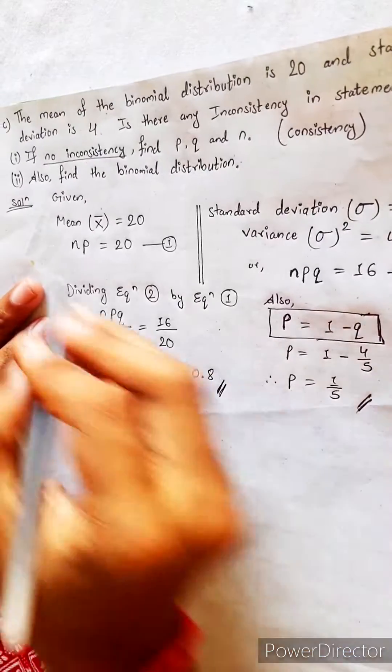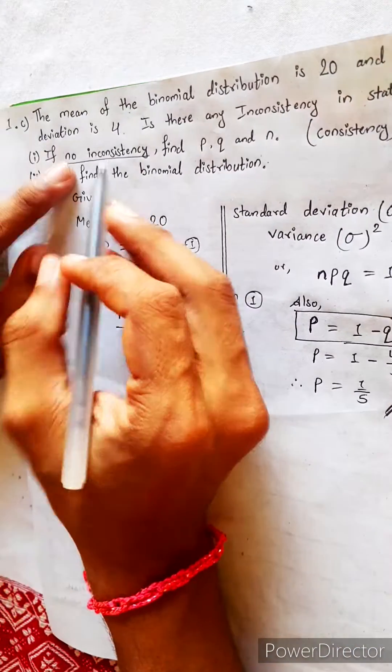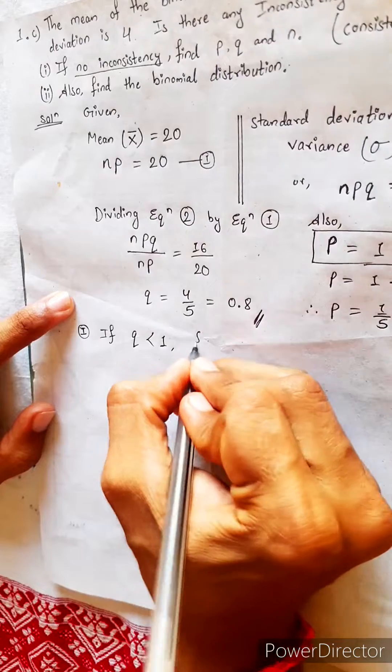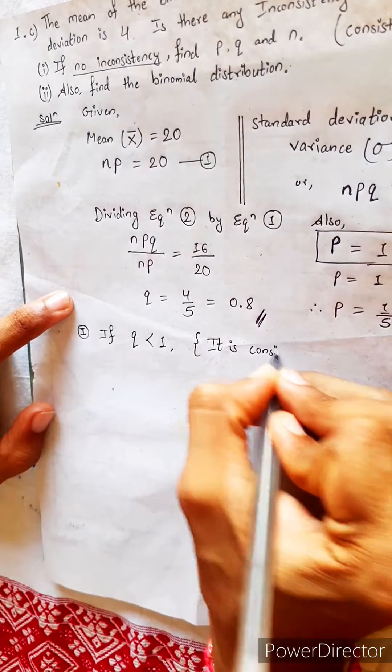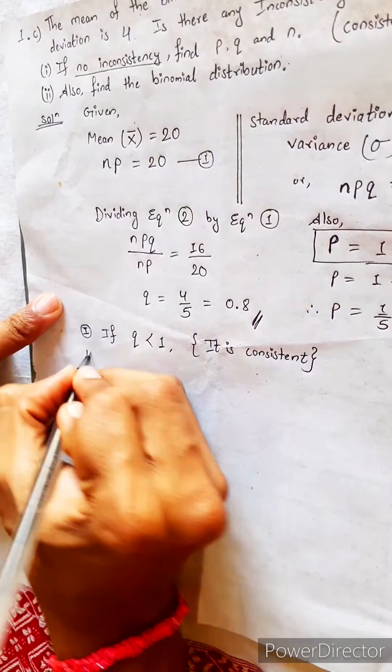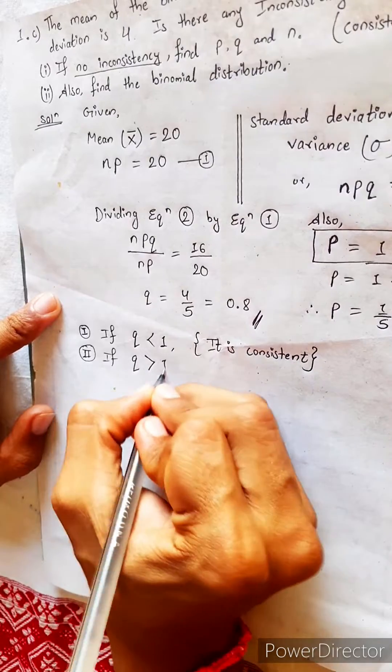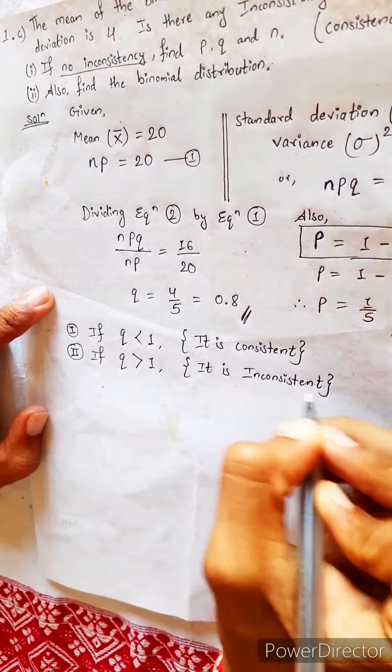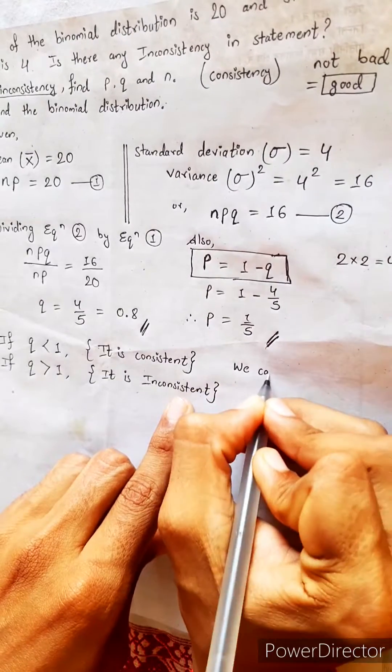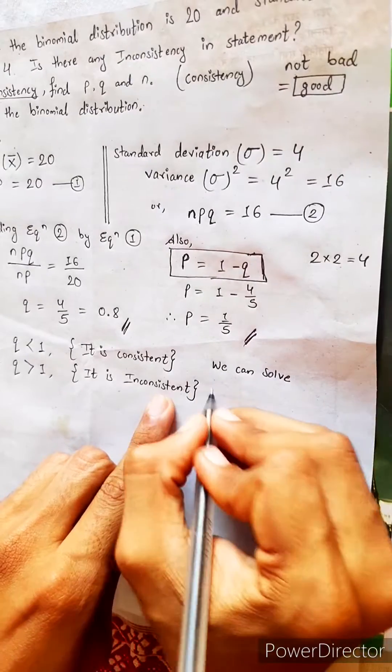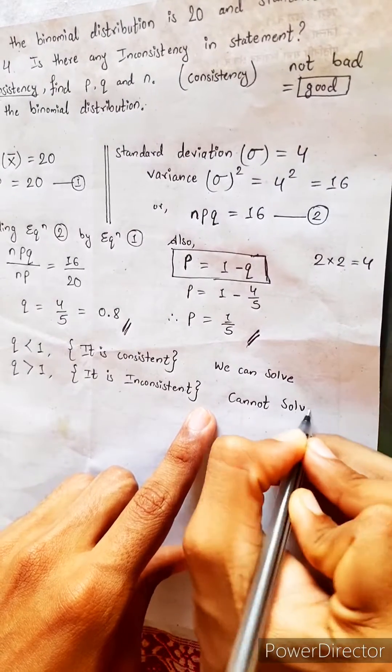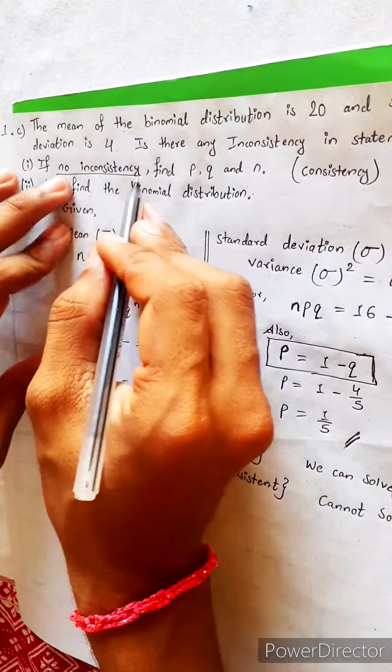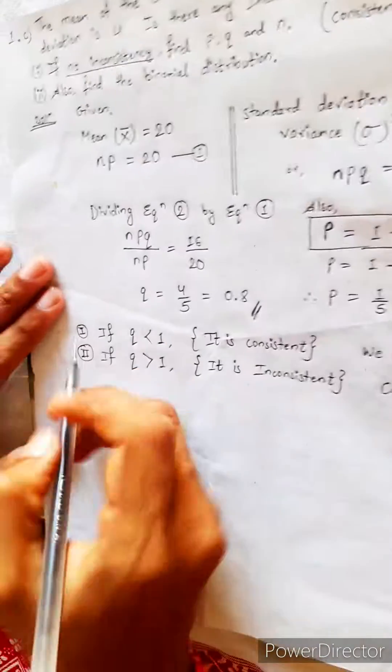Now, what is our main mission? To find N. Let's simply check it is consistency or not. Condition number 1. First condition. If Q is less than 1, then it is consistent. Condition number 2. Look here. If Q is greater than 1, then it is inconsistent. And why people find this consistent and inconsistent? Because consistent we can solve further. But inconsistent we cannot solve. So if somewhere we find inconsistent, we cannot solve the question. Leave it as it is. But if it is consistent, we can solve. If it is consistent, then find N.